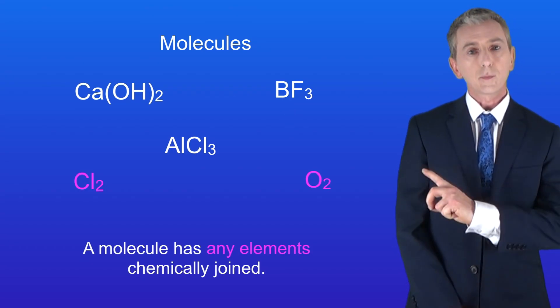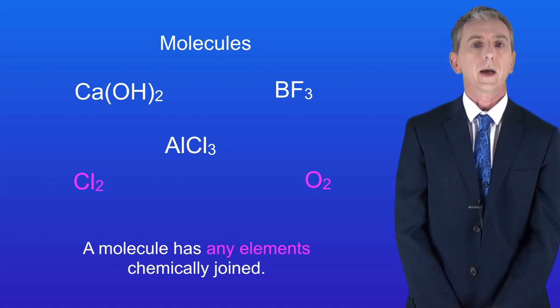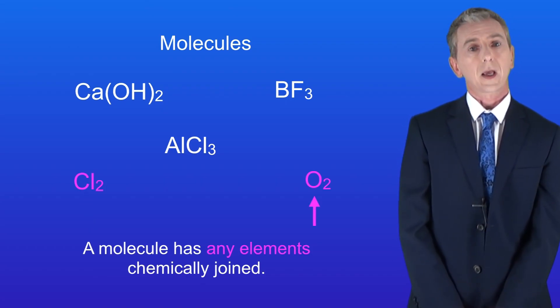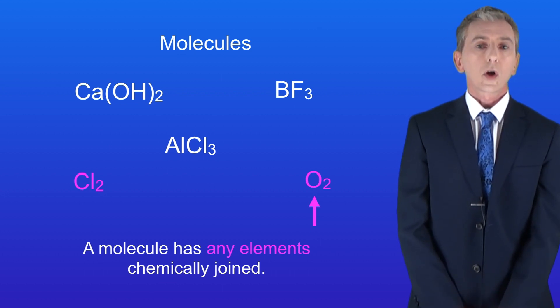However these molecules are elements but they're not compounds. So this chlorine molecule contains two chlorine atoms chemically combined and this oxygen molecule contains two oxygen atoms chemically combined. Both chlorine and oxygen are molecules but they're not compounds.